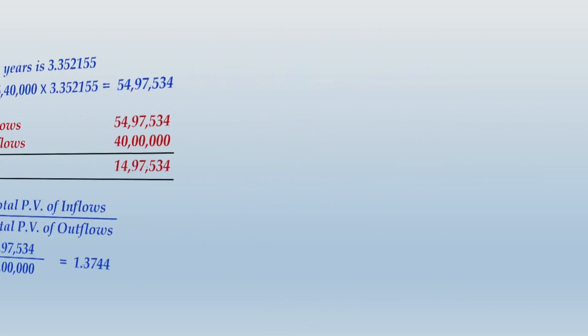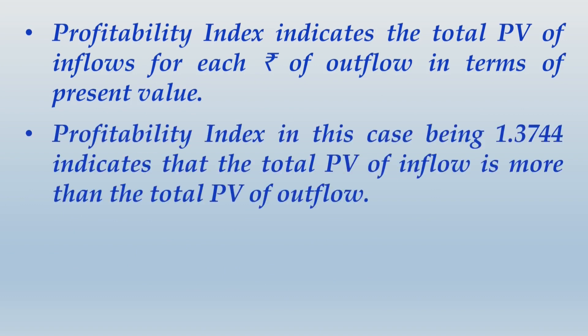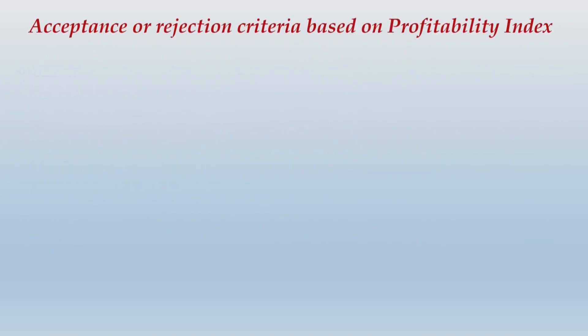Profitability index indicates the total PV of inflow for each rupee of outflow in present value terms. A PI of 1.3744 indicates that the total PV of inflow is more than the total PV of outflow, which indirectly indicates that the NPV will be positive.